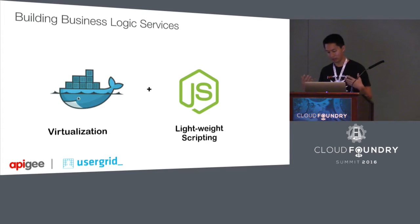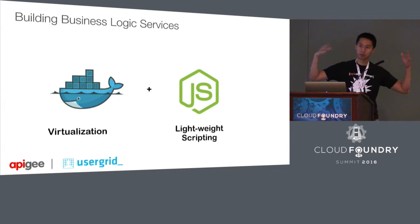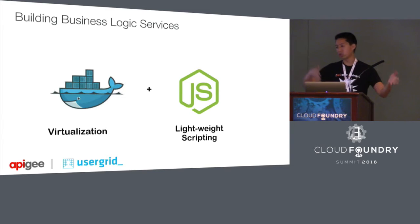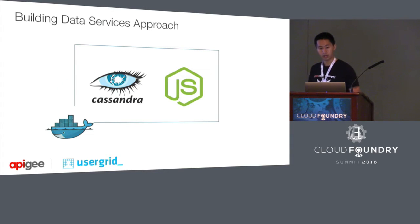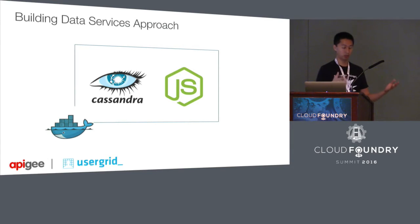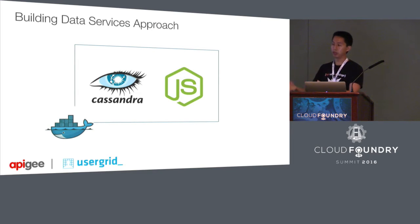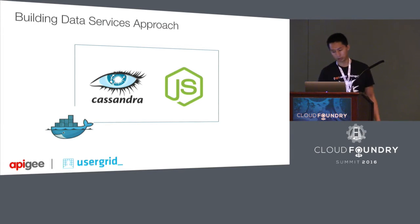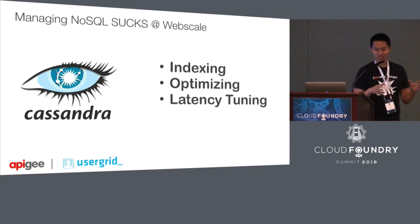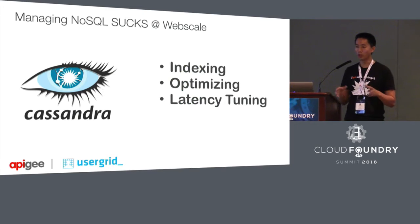The common approach for deployment of business logic services is to put them in a container with a lightweight scripting language or Java, and scale up the number of containers. For data services, the question is: can you extend that same approach, especially for data services that need web scale? A lot of people try to put Cassandra in a container, then put a lightweight scripting language in another container to call the NoSQL database. But containers solve nothing — because at the end of the day, NoSQL has problems when you're doing it at web scale.